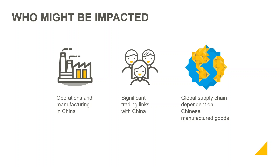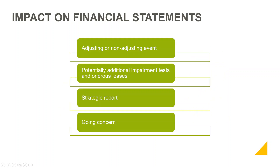For companies that are impacted, they are likely to need to include something in their financial statements. For December year-ends, you need to consider whether coronavirus is an adjusting or a non-adjusting event. At the 31st December 2019, there were only a limited number of cases and no evidence of human transmission. Its subsequent spread and identification as coronavirus in early 2020 does not provide additional evidence about the situation at 31st December 2019, and therefore it is a non-adjusting event.